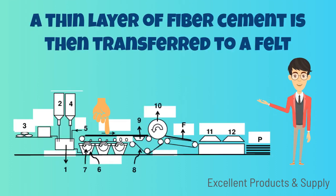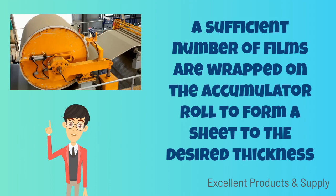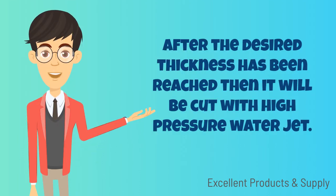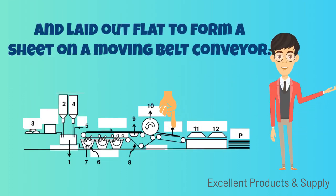The thin layer of fiber cement is then transferred to a felt, and carried to an accumulator roll for further water removal. A sufficient number of films are wrapped on the accumulator roll to form a sheet to the desired thickness. After the desired thickness has been reached, it will be cut with a high-pressure water jet and laid out flat to form a sheet on a moving belt conveyor.